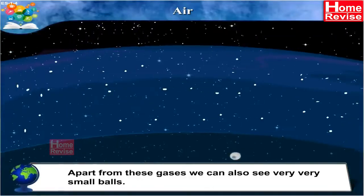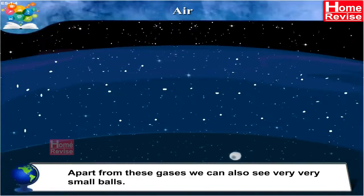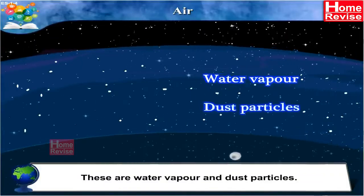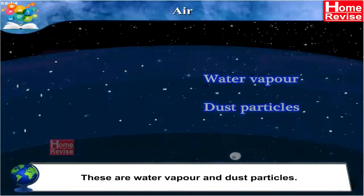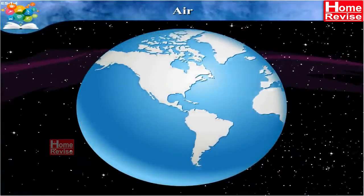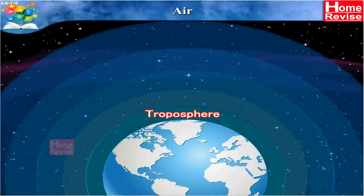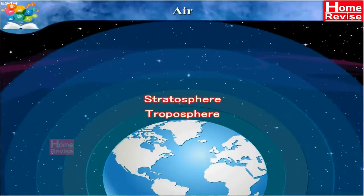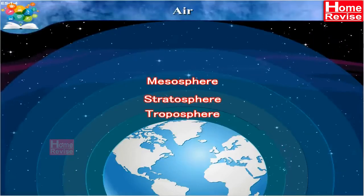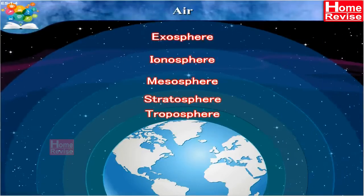Apart from these gases, we can also see very small balls — these are water vapour and dust particles. Remember the five layers of atmosphere: troposphere, stratosphere, mesosphere, ionosphere and exosphere.